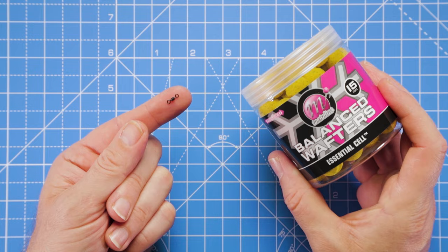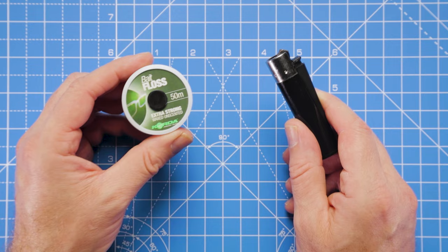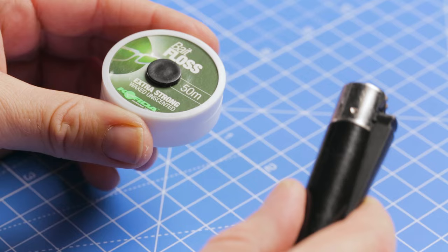I'm going to set the rig up with an essential cell balance wafter in 15mm, and we'll also need a little micro swivel for attaching our hook bait to the rig. That's going to be attached to some floss that we're going to secure and blob in place with a lighter.